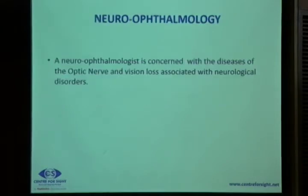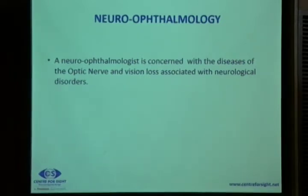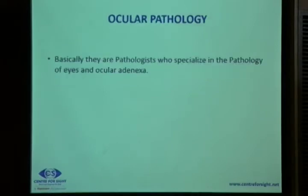The next super speciality is neuroophthalmology. A neuroophthalmologist is concerned with diseases of the optic nerve and vision loss associated with neurological disorders. Lastly, ocular pathology — these are trained pathologists who specialize in the pathology of the eyes and ocular adnexa.